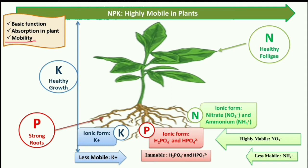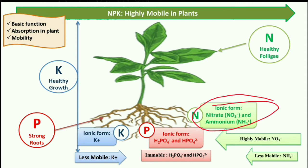First we discuss nitrogen. The basic function of nitrogen is that it is responsible for the green color of plant leaves. If there is a deficiency of nitrogen, the green color of plants will fade and leaves will turn yellow — this is called chlorosis. Nitrogen is available in the soil in two ionic forms: one is nitrate (NO3 negative), which is an anion, and the other is ammonium (NH4 positive), which is a cation.